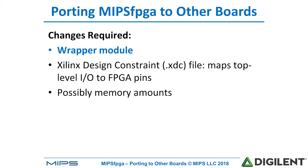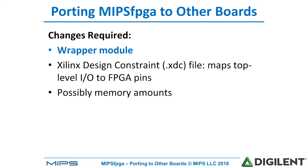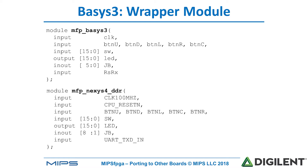The first step in porting MIPS FPGA to the BASIS 3 board is to change the wrapper module. Here we see the interface for the BASIS 3 wrapper module. It looks pretty similar to the Nexus 4 DDR board one — it has clock, push-button interfaces, switches, LEDs, the EJTAG interface, and the UART interface. That file is provided as part of the Getting Started Guide distribution.